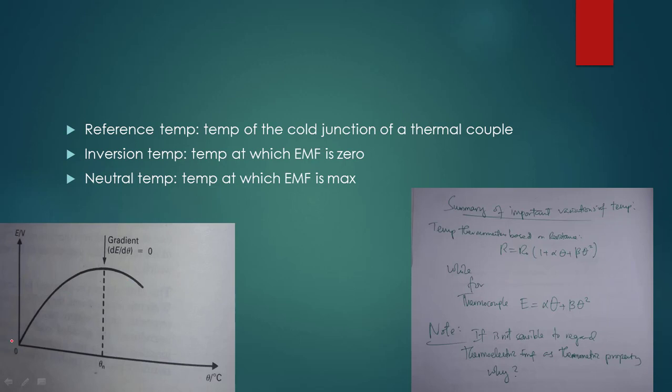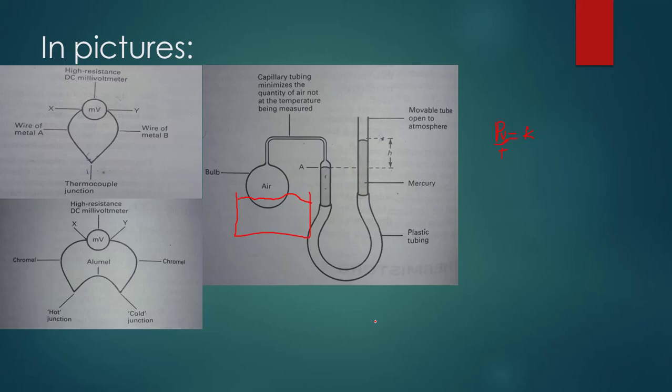At maximum point, the temperature at which EMF is maximum is what we call the neutral temperature. The temperature at which EMF is zero is what we call the inversion temperature. It varies from thermometer to thermometer. There are formulas used to calculate these temperatures.